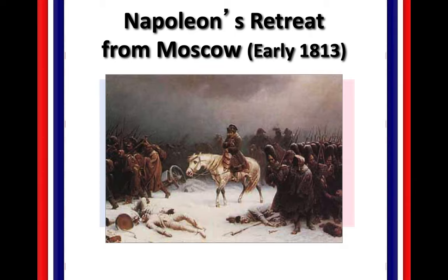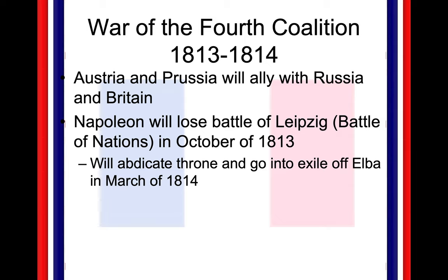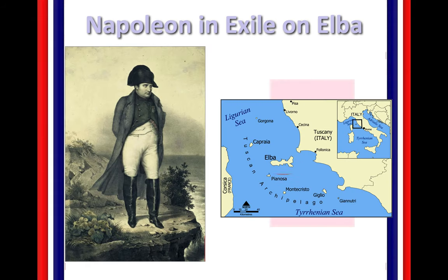The miserable retreat from Moscow is where you're going to start to see the Russians attack — attacking them while it's cold. The soldiers don't have heating; many are just going to freeze to death in their sleep. Miserable. They're also going to have to worry about attacks from the Russian army. Eventually we're going to see Austria and Prussia ally with Russia and Britain. Napoleon is going to lose the Battle of the Nations at Leipzig in October of 1813, and he's going to be forced to abdicate the throne and go into exile on the island of Elba, off the coast of Italy, in March of 1814. However, Napoleon is going to come back — this really showed that a lot of the army was still very much devoted to Napoleon.